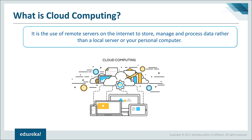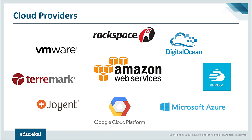This cloud computing business model is actually given to you by a lot of companies. These companies are called cloud providers. Let's look at the various cloud providers out there in the market right now: you have AWS, Google Cloud Platform, Microsoft Azure, IBM Cloud, DigitalOcean, Rackspace, VMware, Telemark, and Showit.